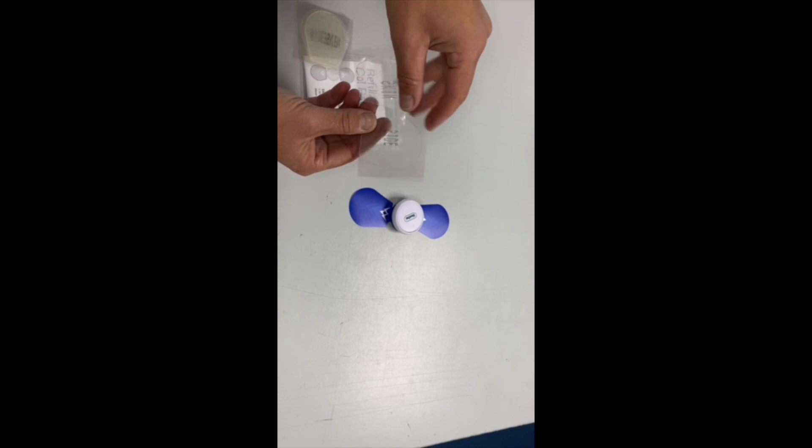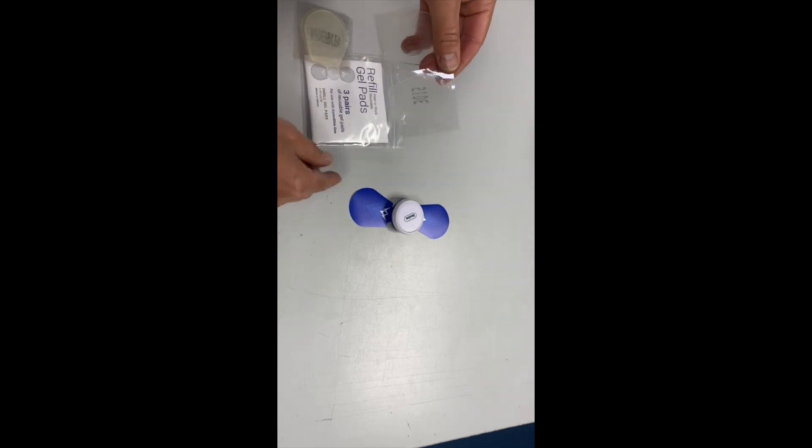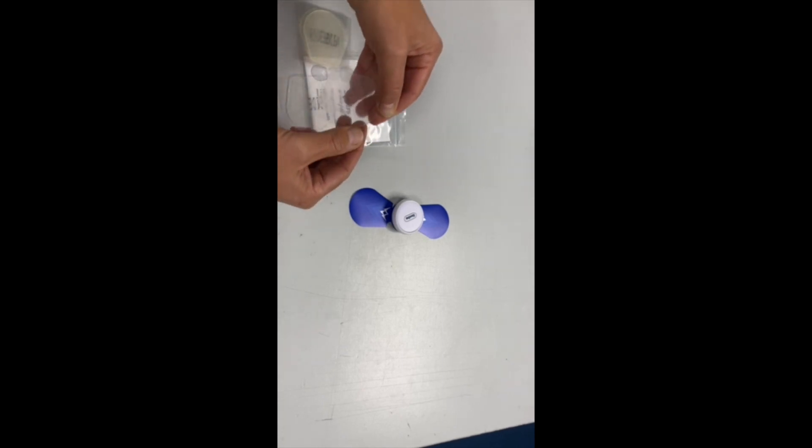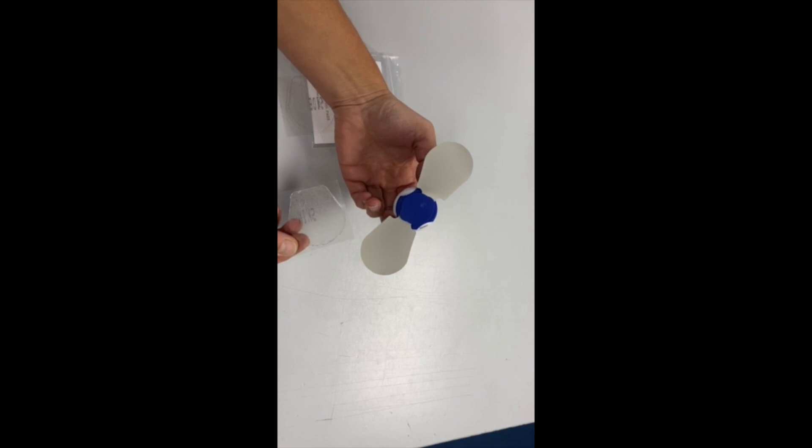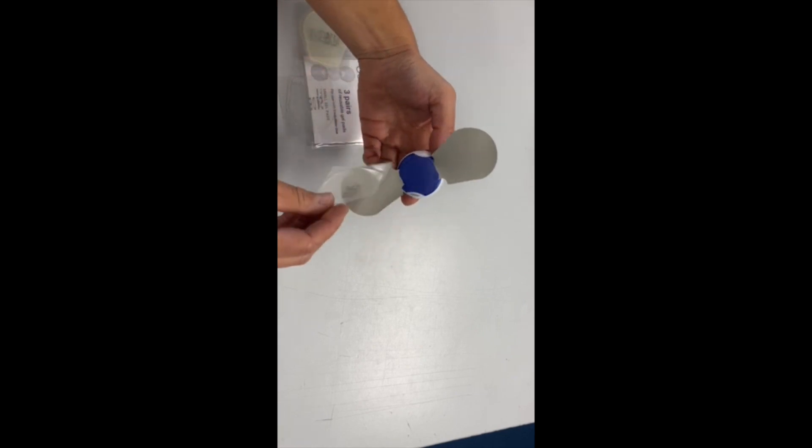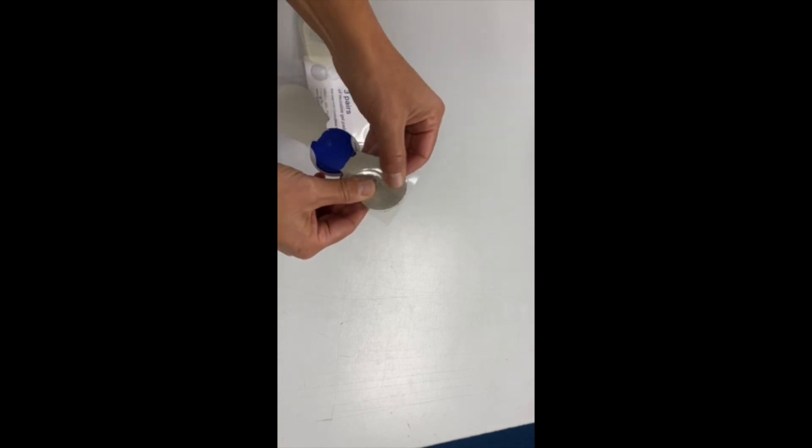You're going to take off the softer, thinner piece of plastic to reveal the gel electrode. You can split the pair in half, and then you're going to stick it to the underside of the silver wings, lining it up and pressing down smoothly.